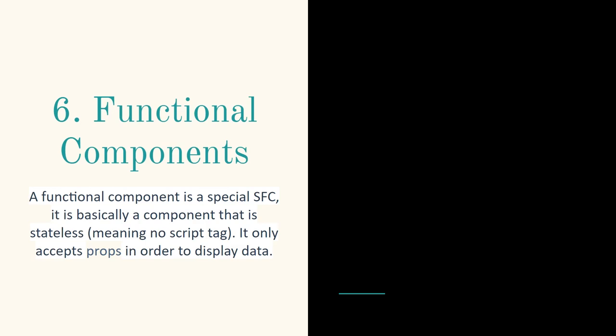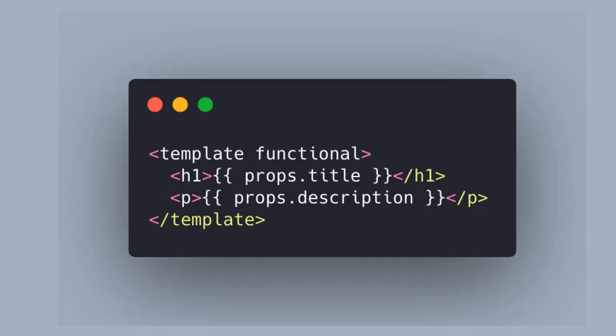If you're coming from Angular and prefer to split those into separate files, you can do that in Vue.js too. Another type of component is a functional component. It's a special single file component that is stateless — no script tag — and only accepts props to display data. You mark the template as functional. This is good to know: if you just have a simple component, pass the props in and it will render really quickly. It's fast, even faster than standard Vue components.